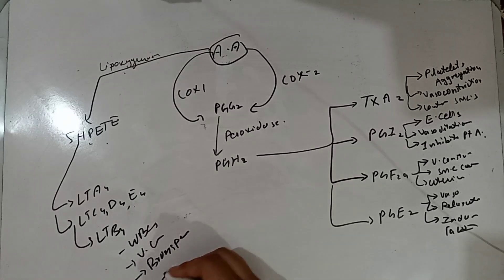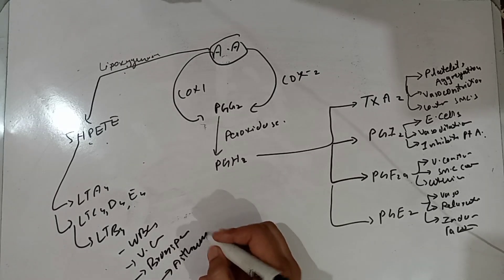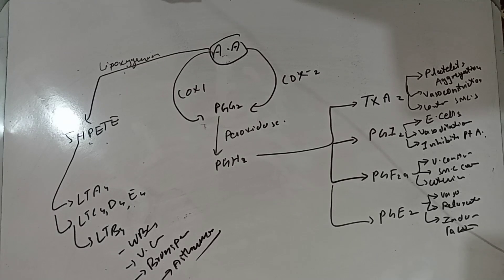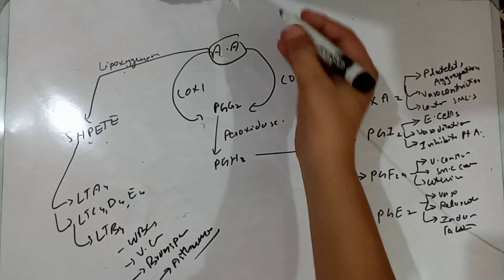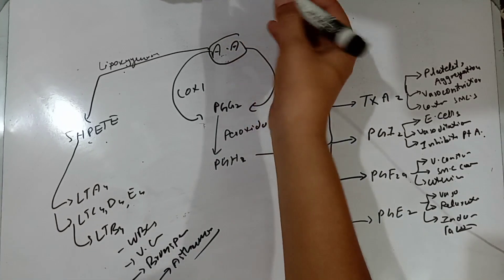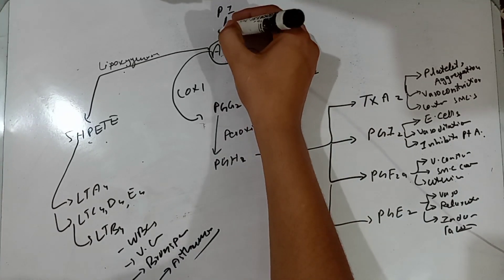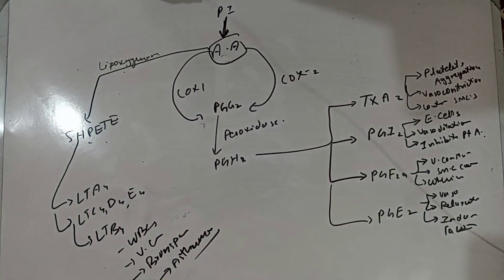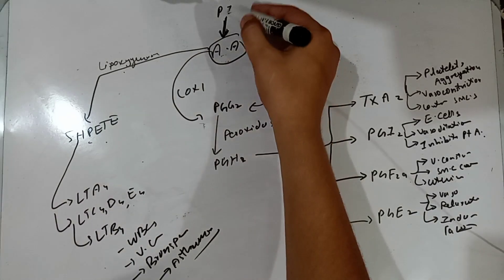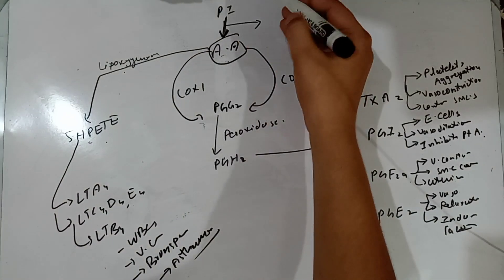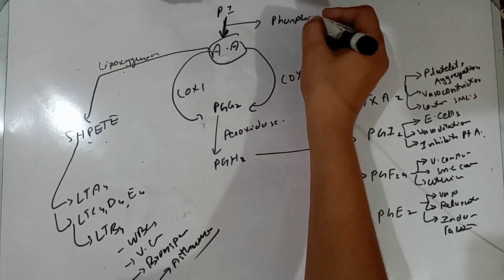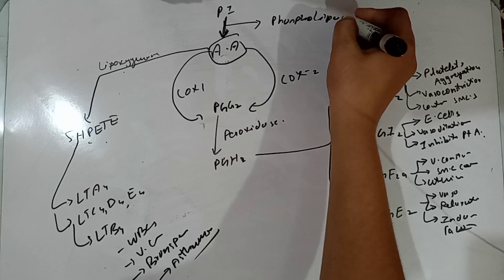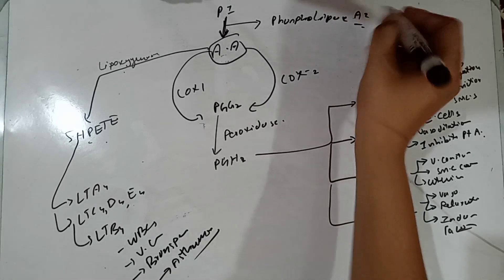Leukotrienes can cause asthma and are involved in the pathophysiology of asthma. Arachidonic acid comes from linoleic acid or from phosphatidylinositol in the membrane. It is released from phosphatidylinositol by the enzyme phospholipase A2.